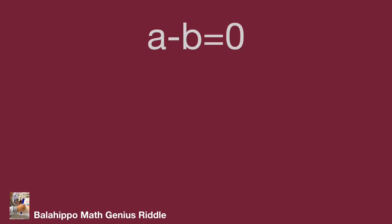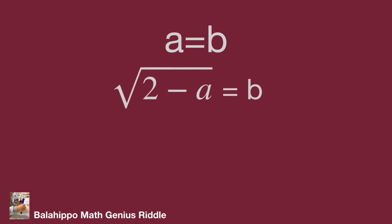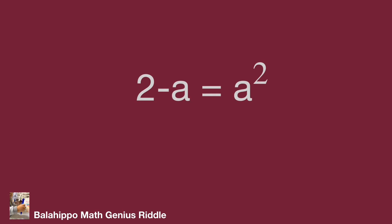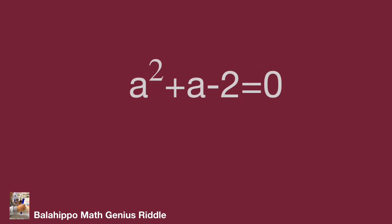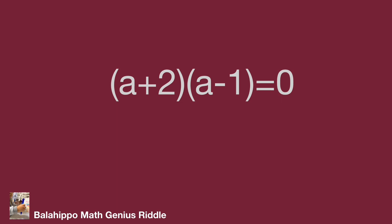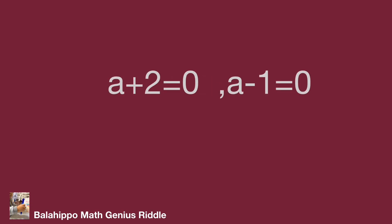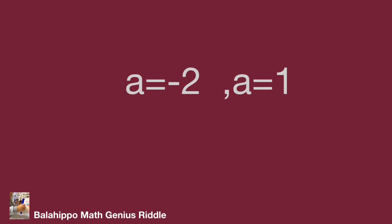When a − b = 0, then a = b. Since we defined √(2−a) = b, substituting b with a gives √(2−a) = a. Squaring both sides and adjusting all terms to the left side: a² + a − 2 = 0. Factoring as (a + 2)(a − 1) = 0 gives a = −2 or a = 1. Substituting both back into the original equation, a = 1 is a valid answer.